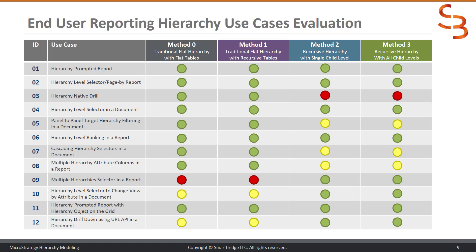Looking at use case number three — multiple hierarchies — if you have a lot of hierarchies that are also dynamically changing, traditional methods don't really address that issue. In traditional methods, multiple hierarchies require creating multiple objects and identifiers, and if they are at different levels you face the challenge of maintaining all those levels. Changing levels over time means modifying the schema on a regular basis, which is a lot of overhead and difficult to handle. In recursive modeling, these scenarios can be easily handled.